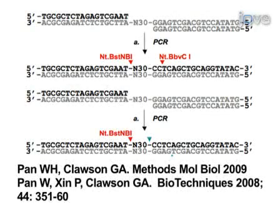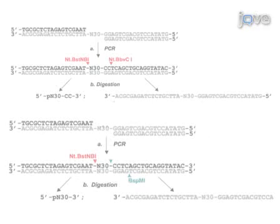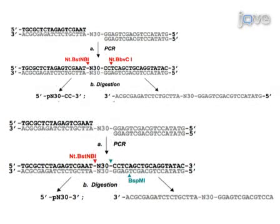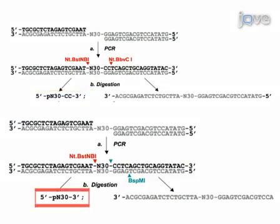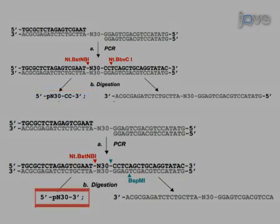To begin this procedure, generate a primer-free, or PF, DNA library as previously described. Cleavage of the double-stranded DNA library followed by gel purification with a 10% denaturing polyacrylamide gel will result in a 32 nucleotide fragment of 5'-phosphate N30cc and a 30 nucleotide fragment of 5'-phosphate N30cc.